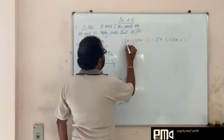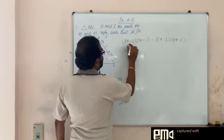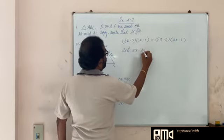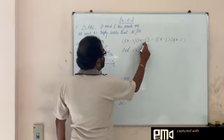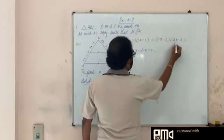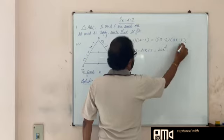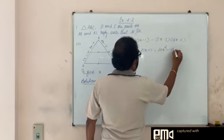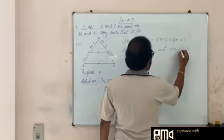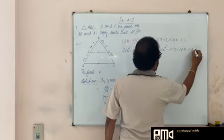Shall multiply. 8x into 3x is 24x squared. 8x into minus 1 is minus 8x. Minus 7 into 3x is minus 21x. Minus 7 into minus 1 is plus 7. Here also we multiply: 5x into 4x is 20x squared, 5x into minus 3 is minus 15x, minus 3 into 4x is minus 12x, minus 3 into minus 3 is plus 9.